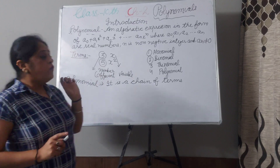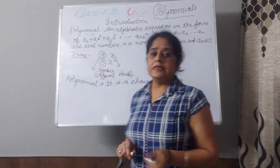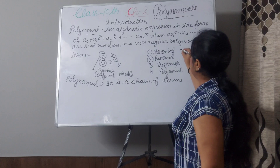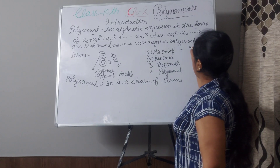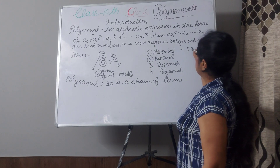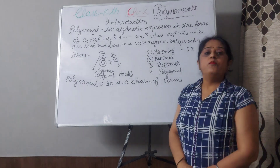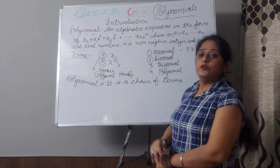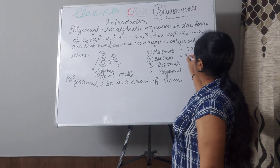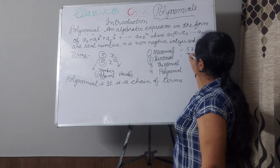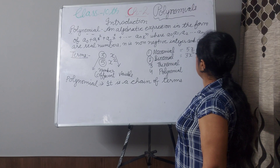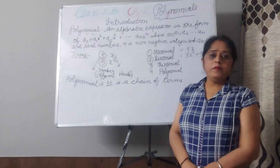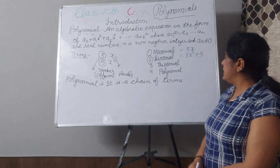When only a single term is present, it is called a monomial — 'mono' means single. For example, 5x is a monomial. If we have 2 terms, like 3x² plus 5, it is a binomial — there are 2 terms.